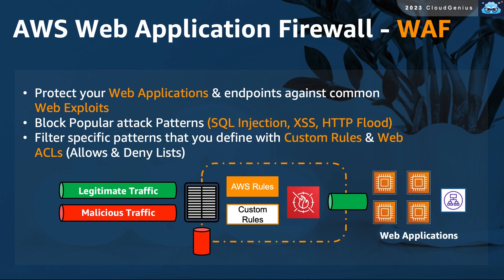All of these are automatically loaded into the service through some AWS-managed rules. However, you can also add your own custom rules, which are made of web access control lists composed of allow and deny policies that match specific patterns that you define. Malicious traffic that matches any of the established rules will be filtered by the WAF.